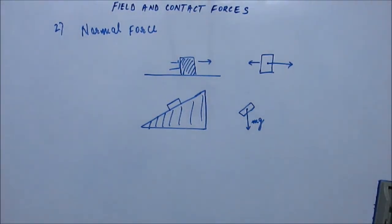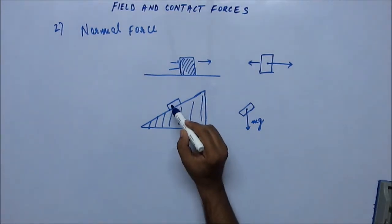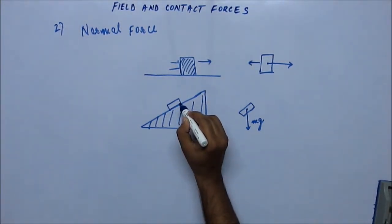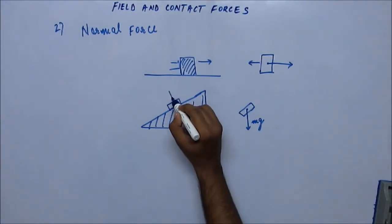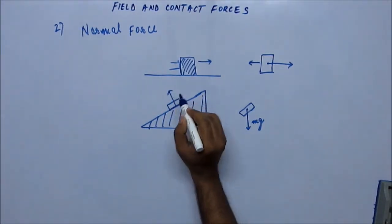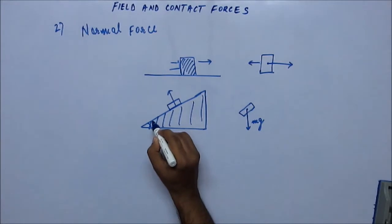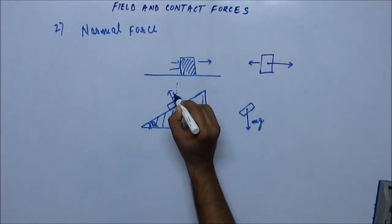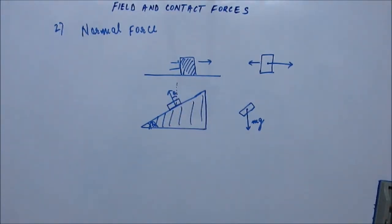Normal reaction is always normal — perpendicular — to the surface. 'Normal' in physics means perpendicular. The force acts perpendicular to the surface of contact. Now if the angle of the wedge is theta, then the angle that the normal makes with the vertical will also be theta, which comes from simple geometry.